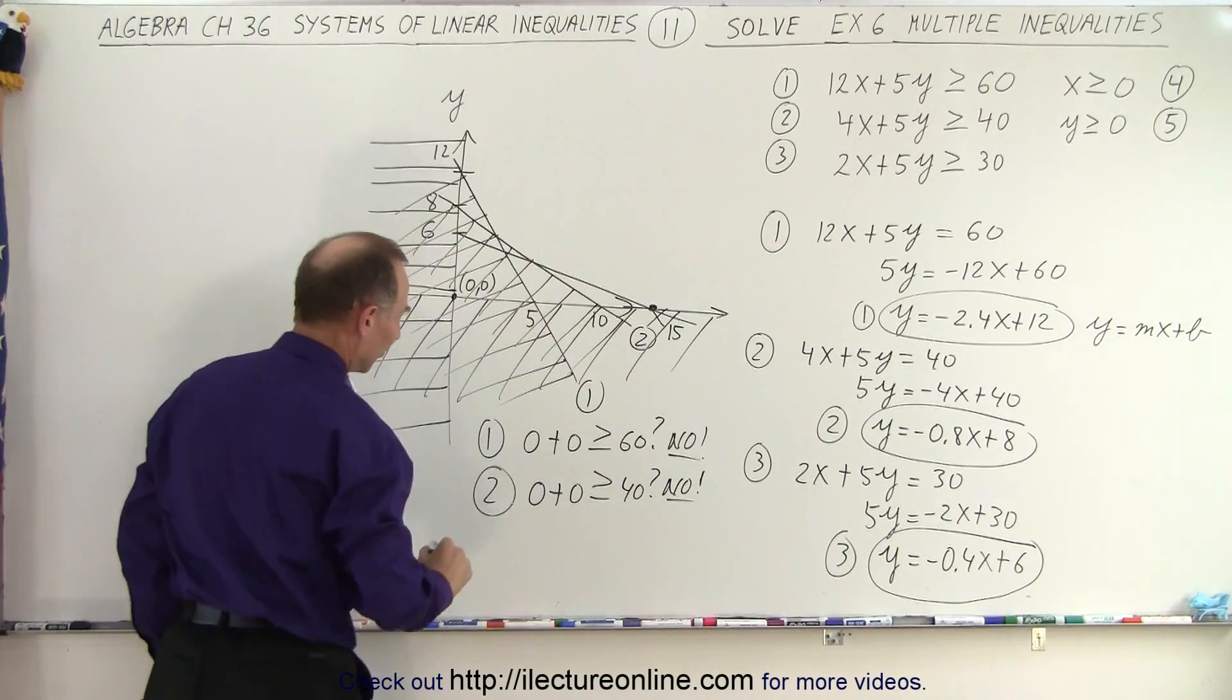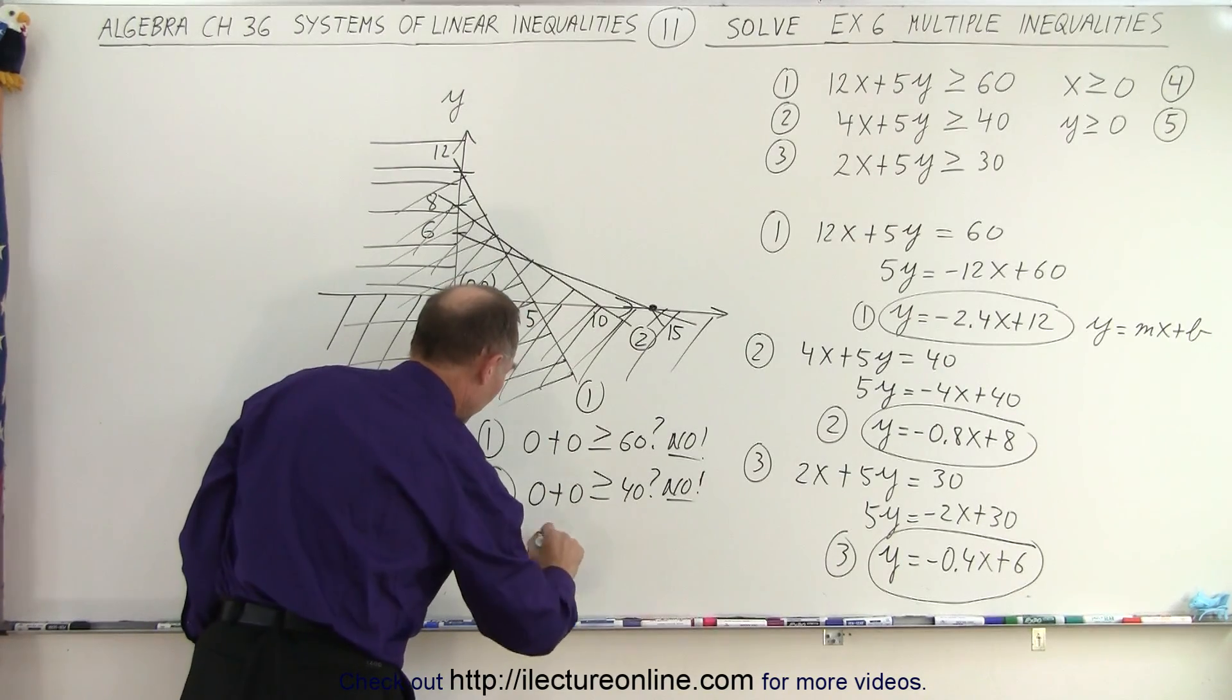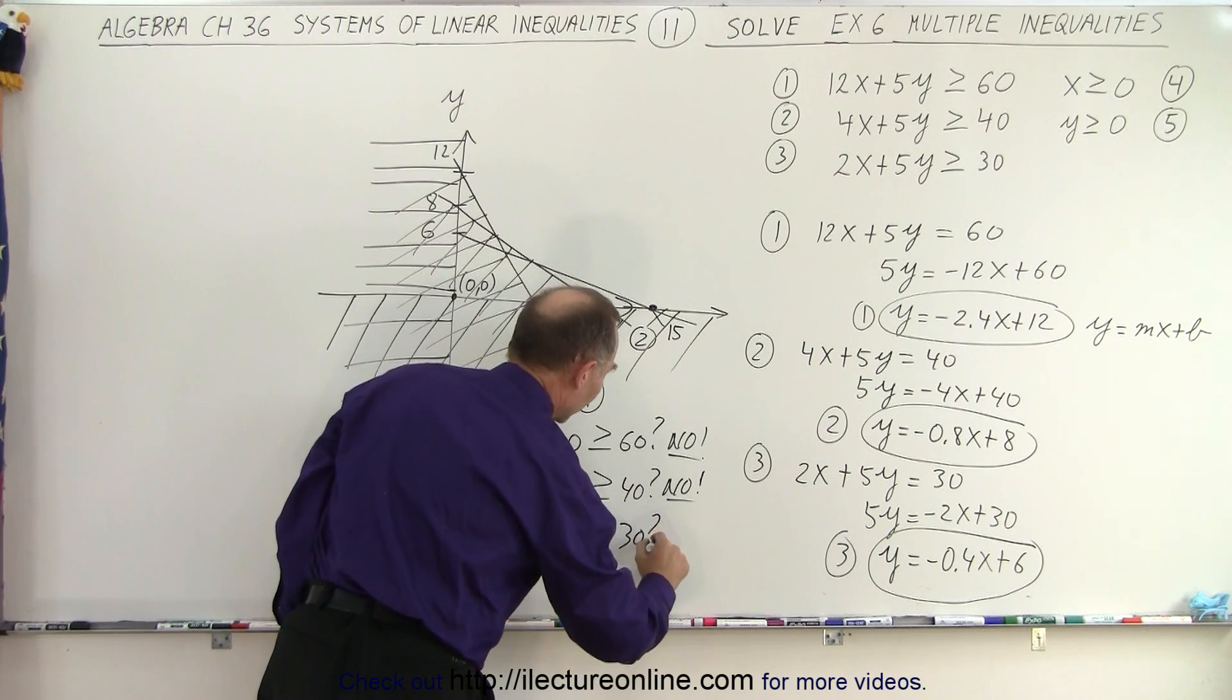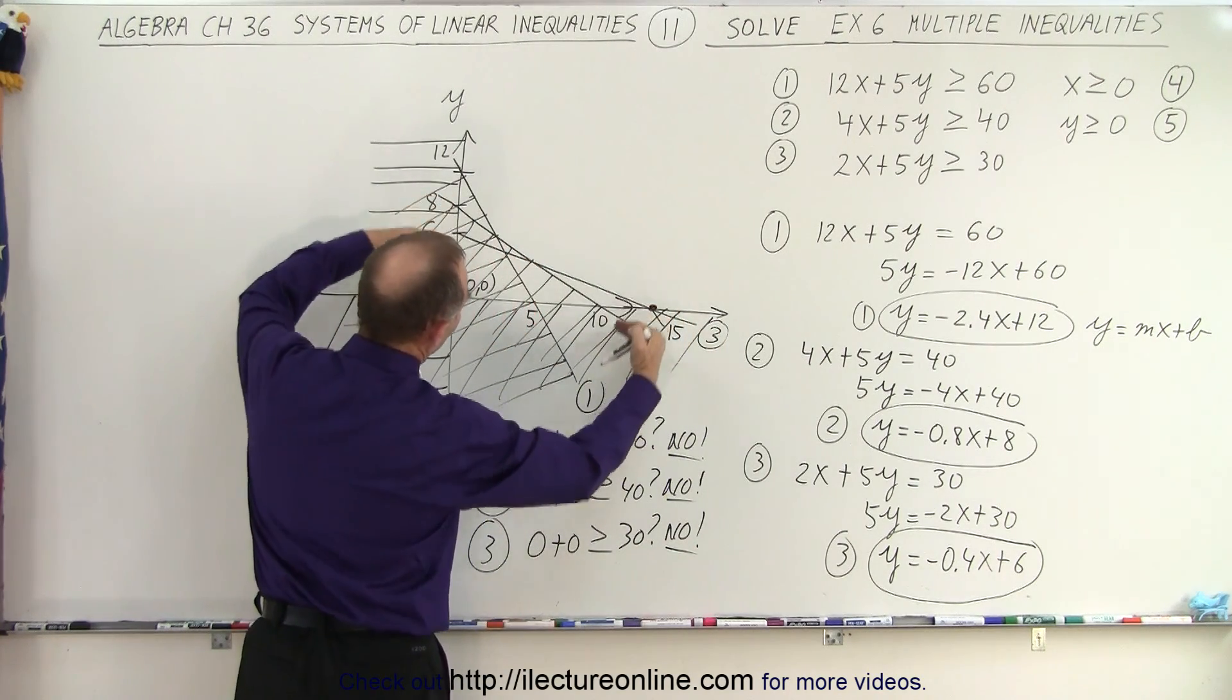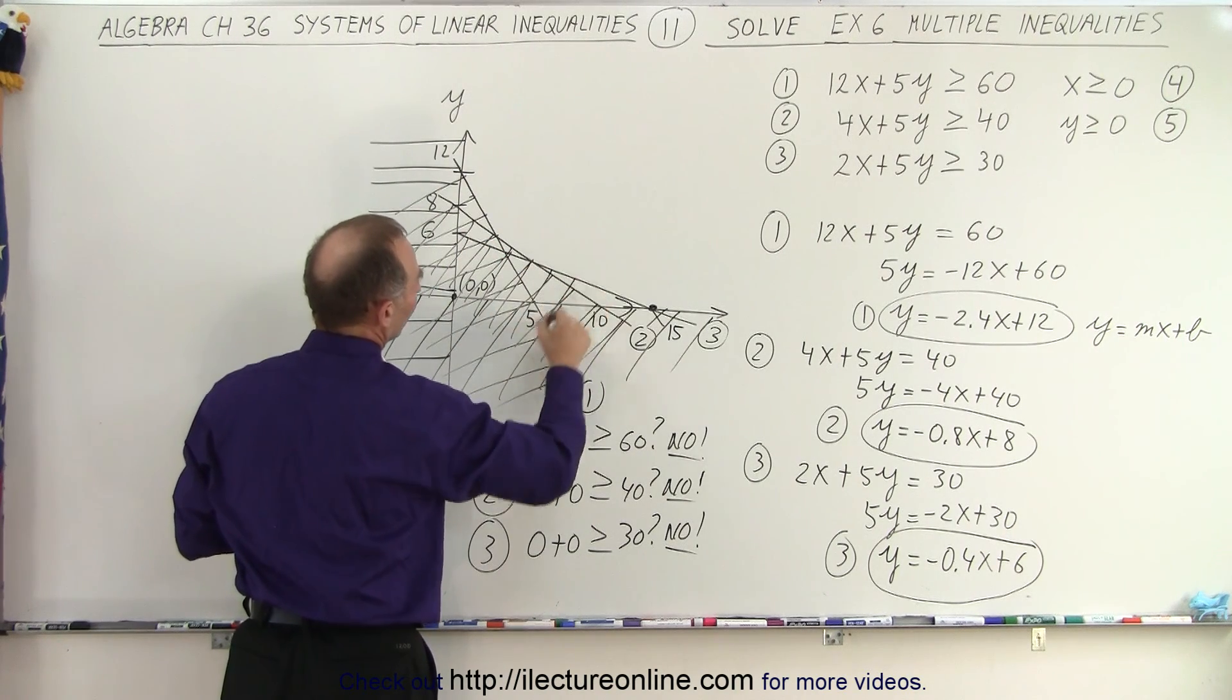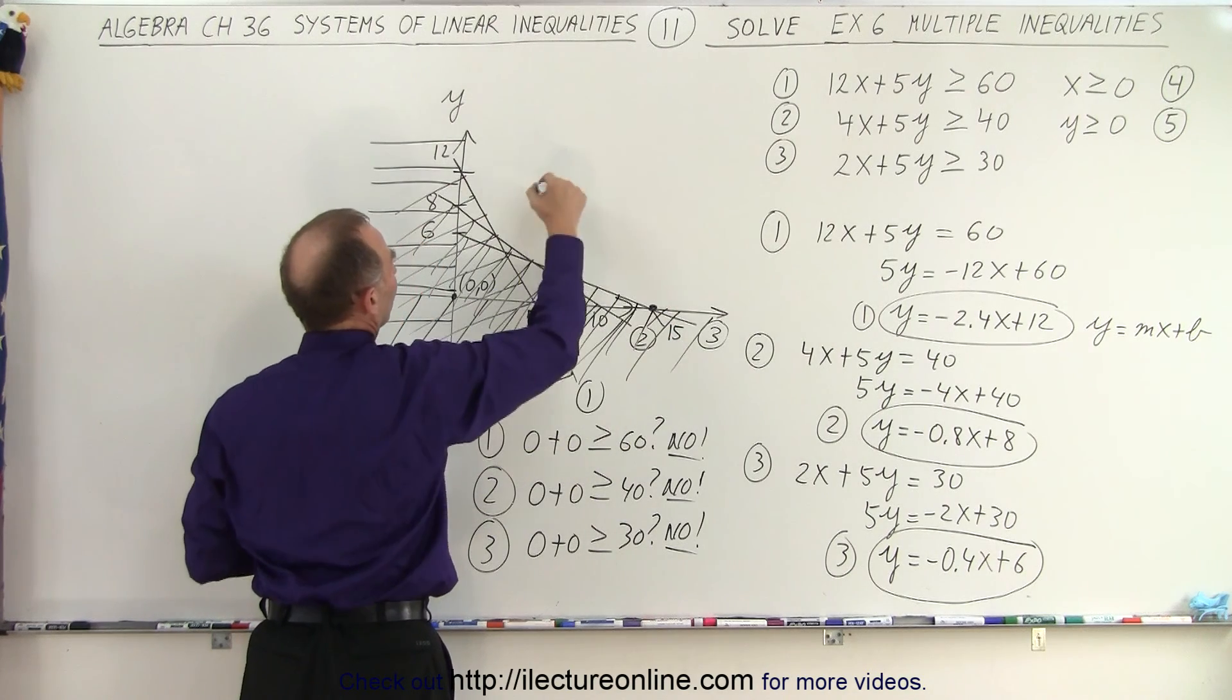And finally number three. Again we plug in zero zero for x and y, and is that greater than equal to 30? And of course the answer is no again. So according to line number three, and this is line number three right here, anything on this side of line number three does not belong to the solution, so we can go ahead and get rid of that.